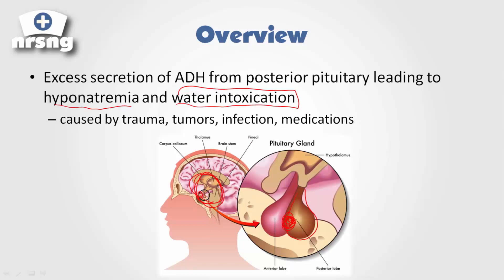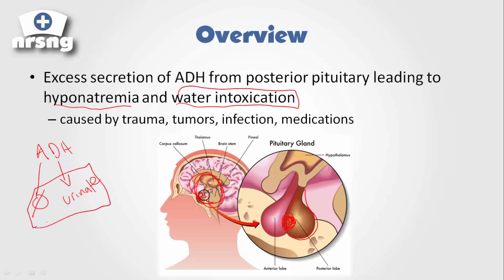So what really happens is we have this excess amount of antidiuretic hormone. Diuretic means to urinate, and anti means to not. So with this excess secretion of antidiuretic hormone, our body is not going to filter and excrete urine — rather, it's going to retain water.